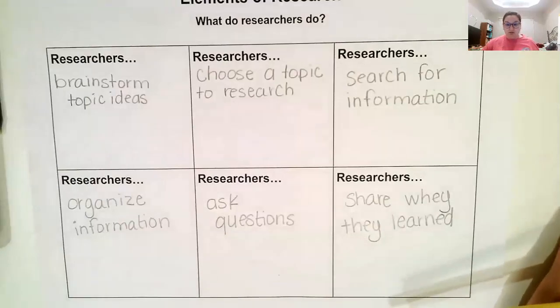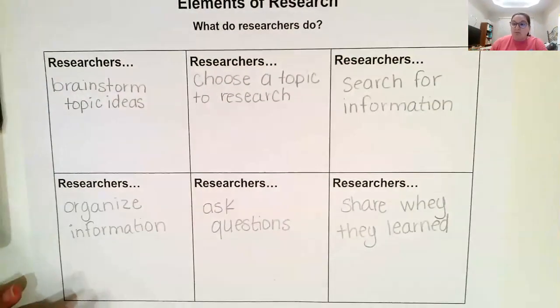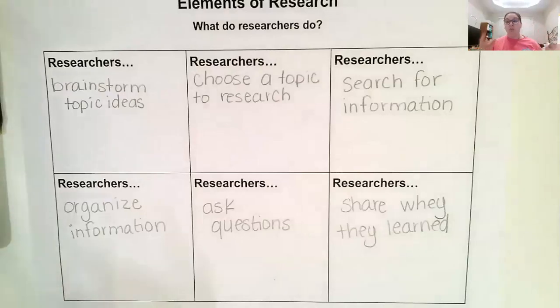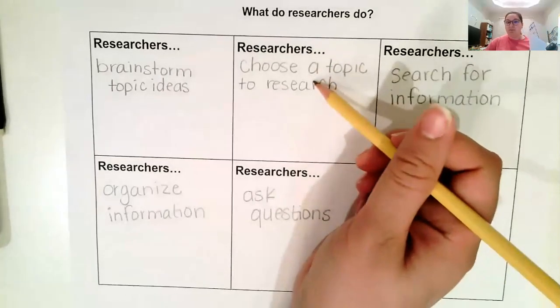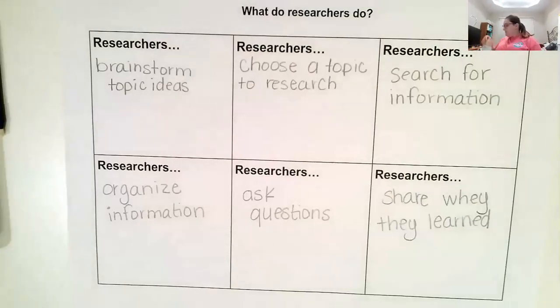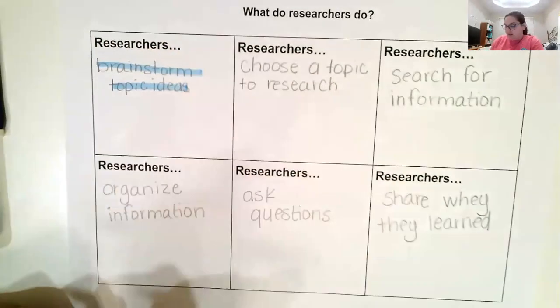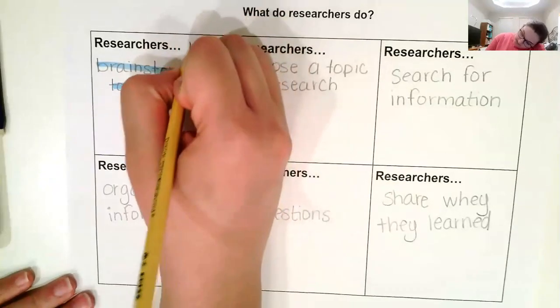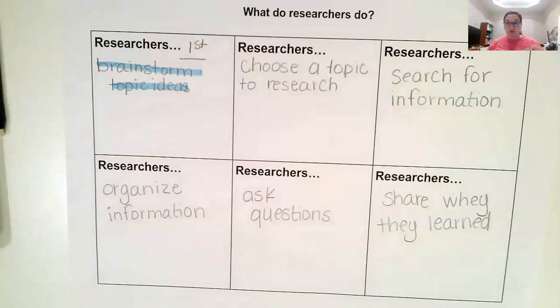Now that we know what researchers do, let's talk about what we're going to be writing about. We're going to be writing about animals — not all animals, but we're specifically going to pick one animal. But first, remember: before we can choose a topic to research, we need to brainstorm. We're going to work on this first part — brainstorm topic ideas. This is the very first step to doing a research report. The next handout you'll need for today looks like this.